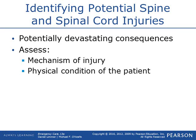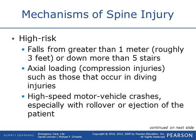Identifying potential spine and spinal cord injuries: always assess the mechanism of injury with a good scene assessment. High-risk mechanisms include falls from greater than 3 feet or down more than 5 stairs. Also axial loading — compression injuries such as diving — like a crinkle straw being pushed together, that's an axial load injury. High-speed motor vehicle crashes, especially with rollover or ejection, are also high risk.